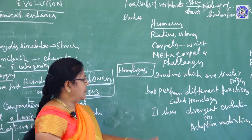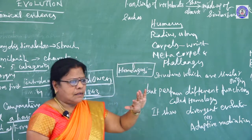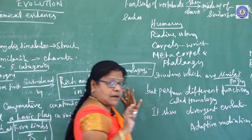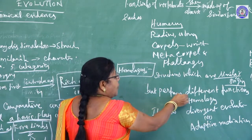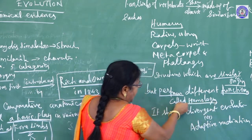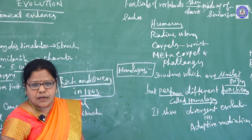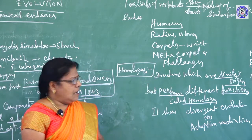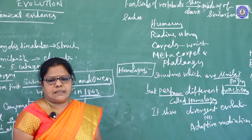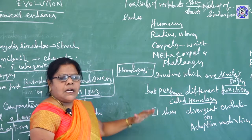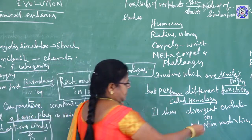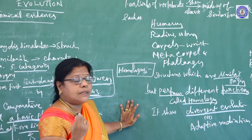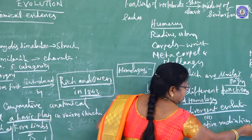The structures which are similar in origin but perform different functions are called homologous organs. It shows divergent evolution — that means homologous organs demonstrate divergent evolution or adaptive radiation.